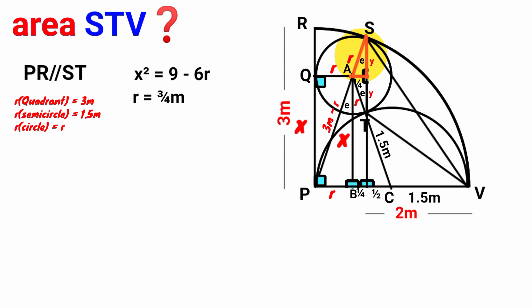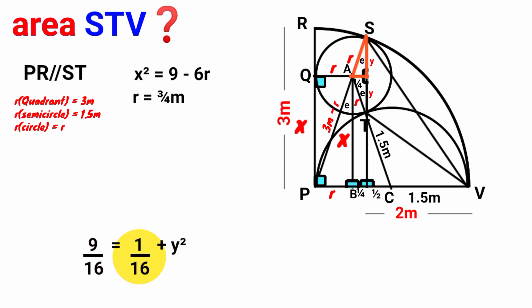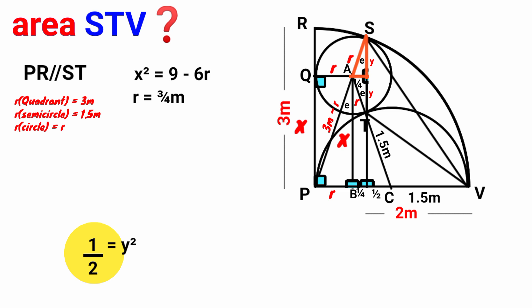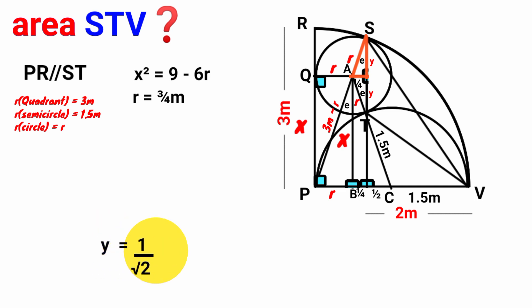Coming to this triangle — since it is a right-angle triangle, applying the Pythagorean theorem with hypotenuse r: r² = (1/4)² + y². With r = 3/4: (3/4)² = 9/16 and (1/4)² = 1/16. So y² = 9/16 − 1/16 = 8/16 = 1/2. Taking the square root of both sides: y = 1/√2. So the length of each half of the base is 1/√2.